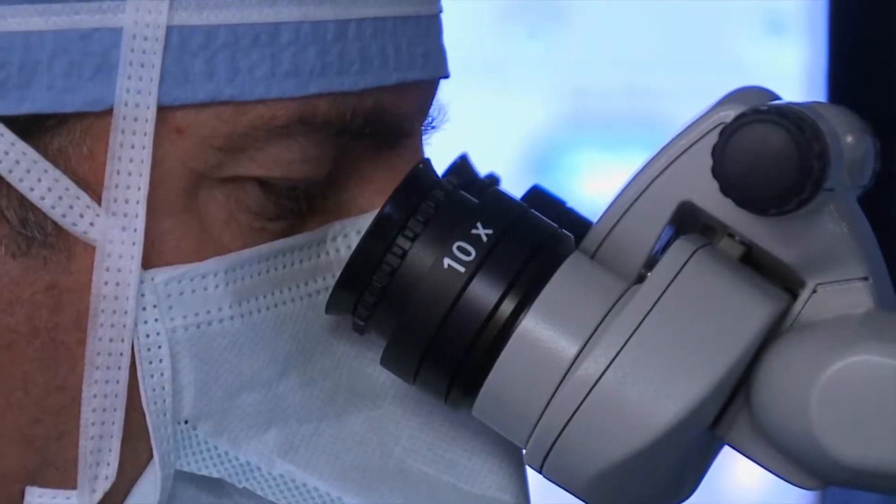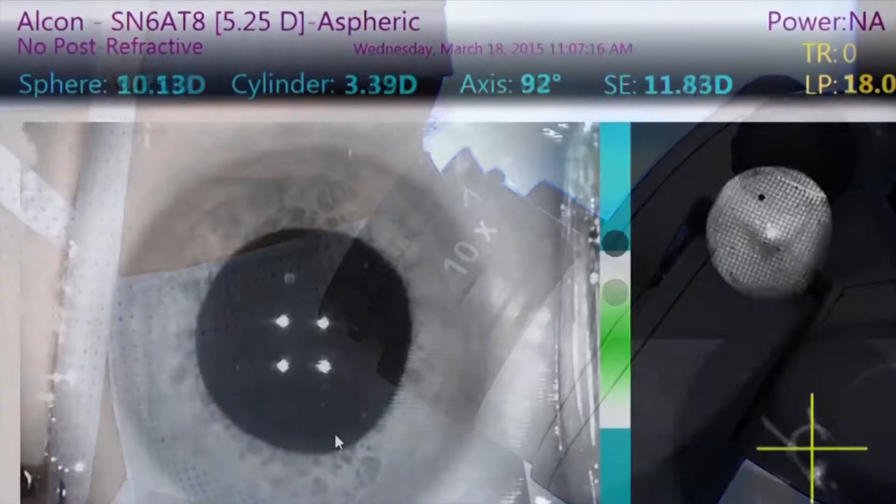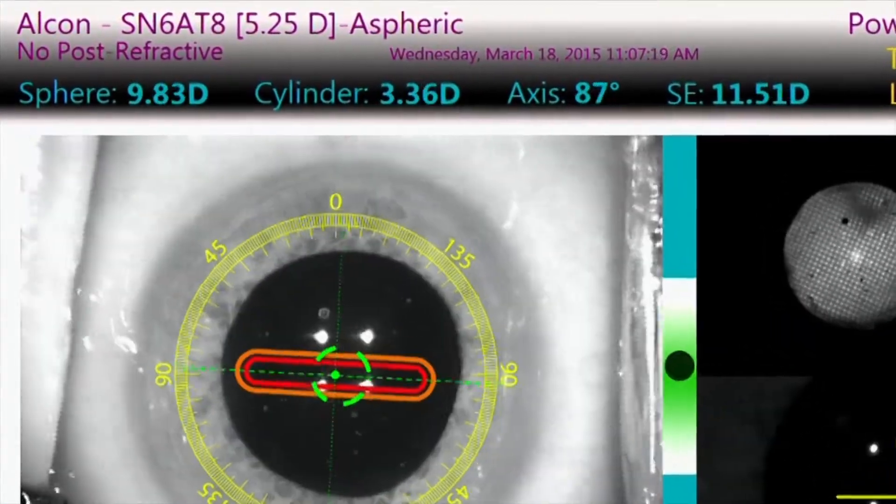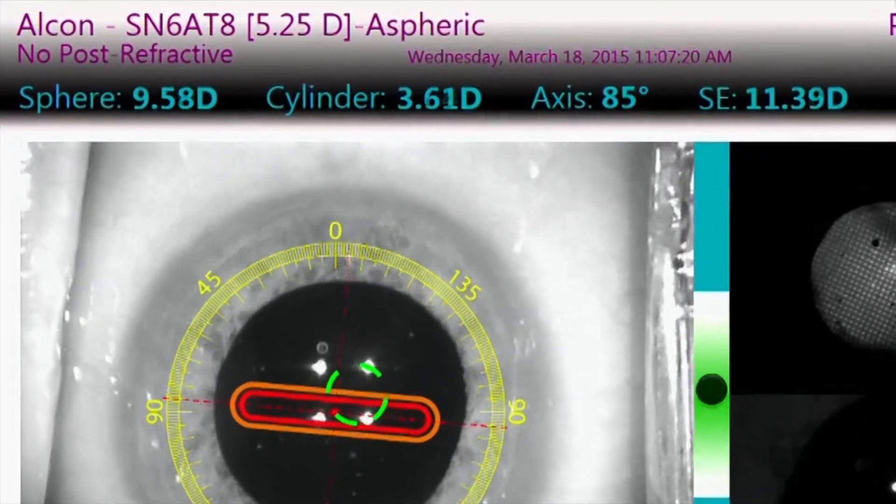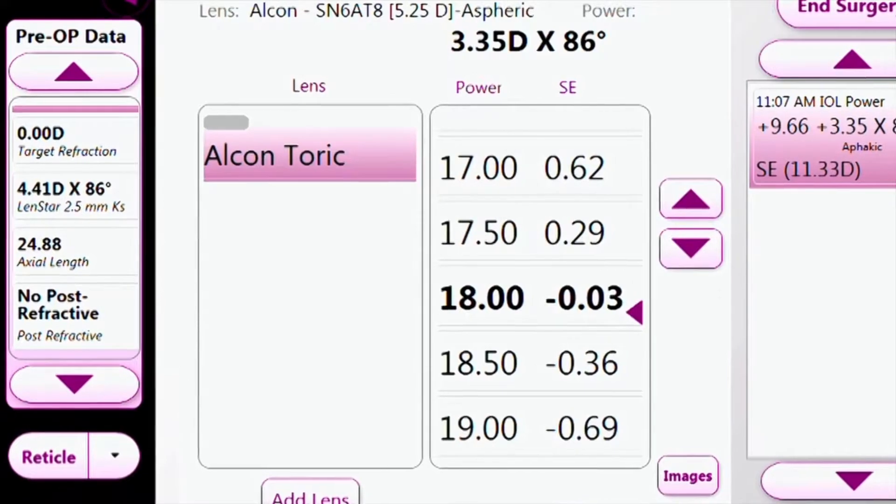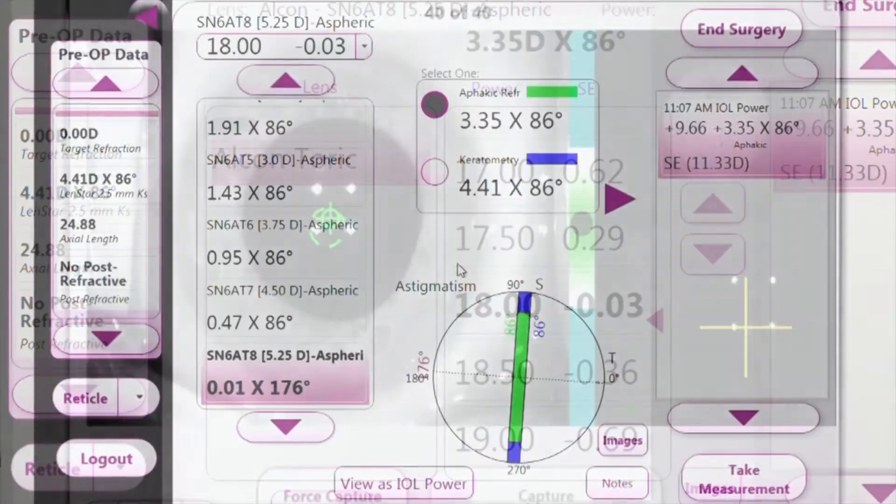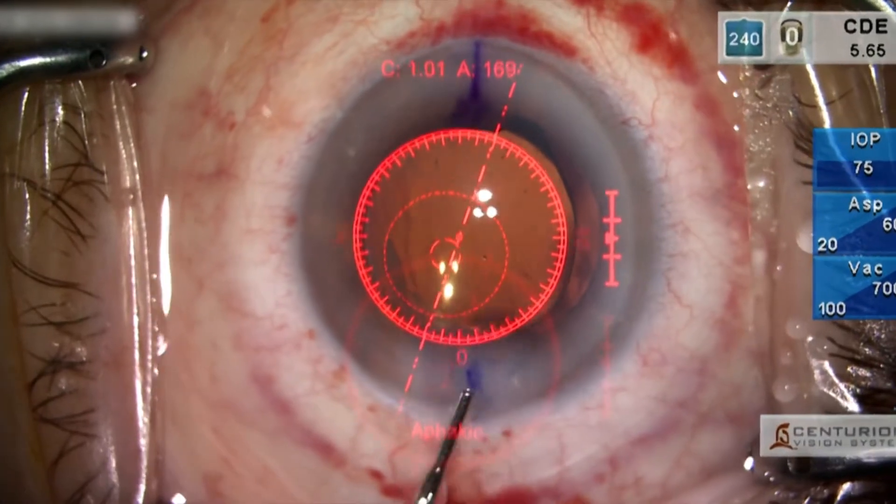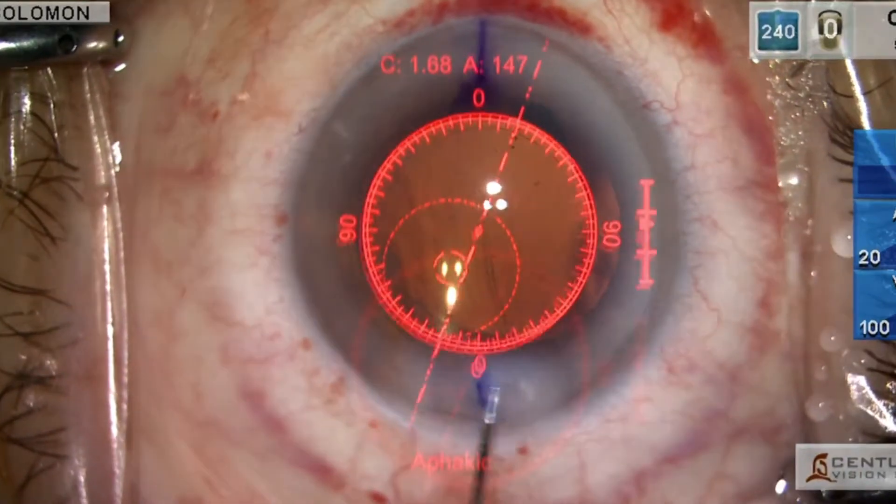The Aura system with Verify Plus technology provides streaming refractive information to help the surgeon determine power, cylindrical magnitude, and axis, accounts for anterior and posterior corneal astigmatism, helps surgeons finalize lens choice and placement during surgery, and reduces incidences of unintended post-op astigmatism.